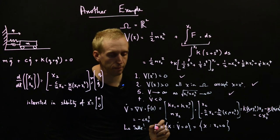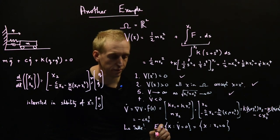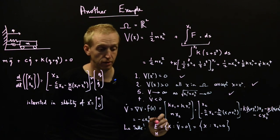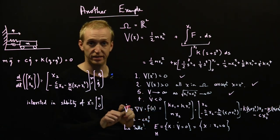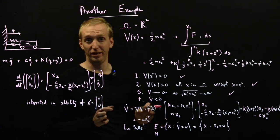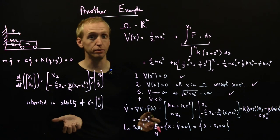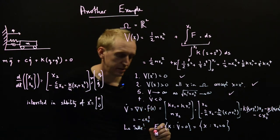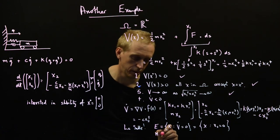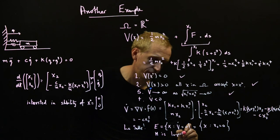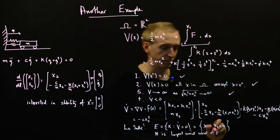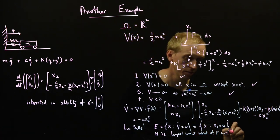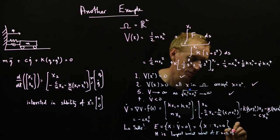So we have this set E, which is the set of points for which V dot is equal to 0. And then we need to find M. So M is the largest invariant subset of E. So this is the largest invariant subset of E, where if we start in E, we'll always stay in E. And just like before, we're hoping that M is just going to be the equilibrium point because then we'll be able to prove asymptotic stability. So M is the largest invariant subset of E. And this was always with respect to the dynamics. So with respect to x dot is equal to f(x).